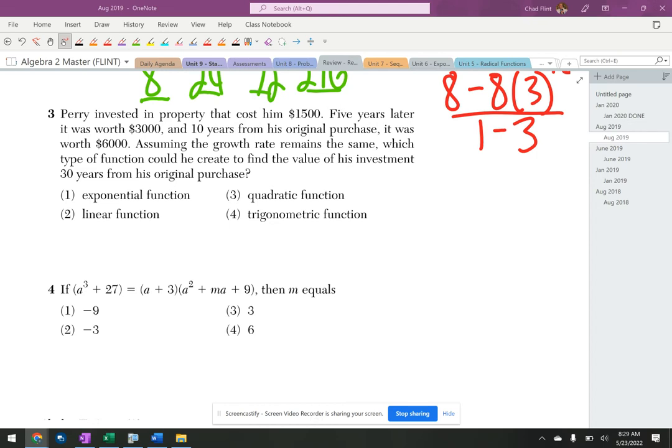Okay, we invested in property that cost $1500. Five years later it was worth $3000. Ten years it was worth $6000. Assuming the growth remains the same, what type of function could be created to find the value of this investment 30 years from the original purchase? So we're going $1500 at year zero basically.